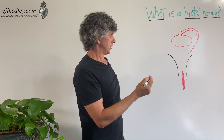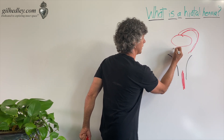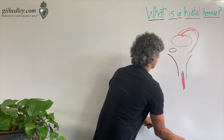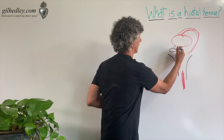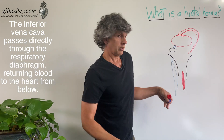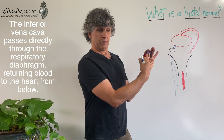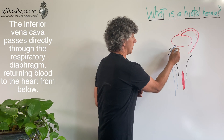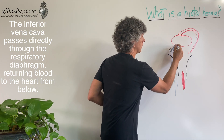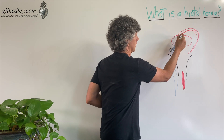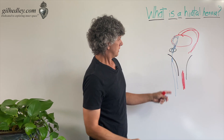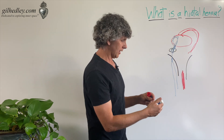What else goes by the diaphragm? How about the vena cava? That's also from the heart. Let's do this in blue because this is the blood flowing from your lower body up through the diaphragm, and it actually does pass through an aperture or an opening to return to the heart in the right atrium. So we have the aorta and the inferior vena cava.